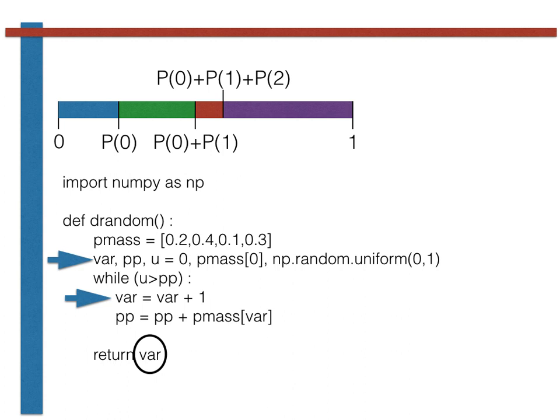We also see that before the while loop is entered, a uniform random variable, u, between 0 and 1 is generated. In addition, we set a variable called PP equal to the first element of the probability mass function. Consequently, if u is less than P0, the variable VAR is never incremented and our function returns 0. This makes sense as the random variable u is in the blue segment in this particular case.